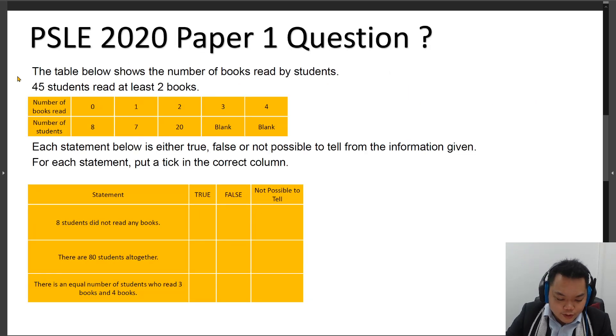So let's start with this logical reasoning from paper one. The table below shows the number of books read by students. 45 students read at least 2 books. So you can see that this table here, the number of books read...